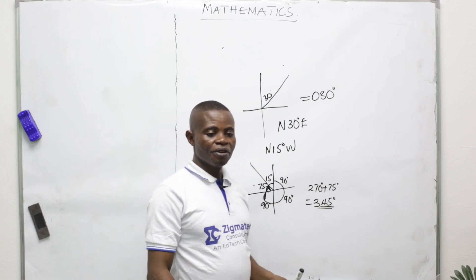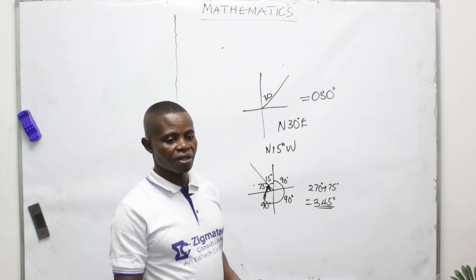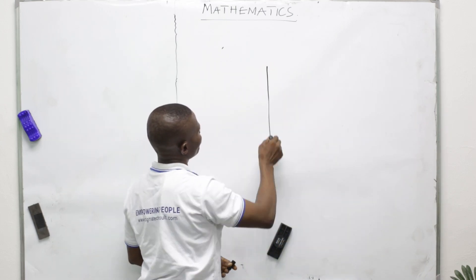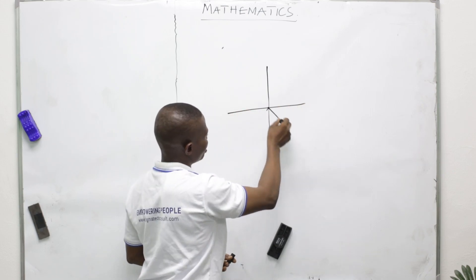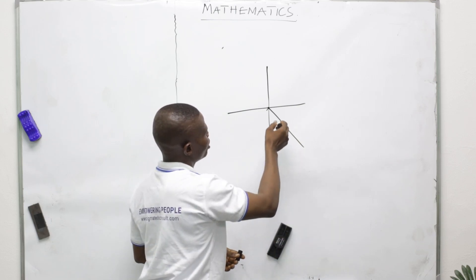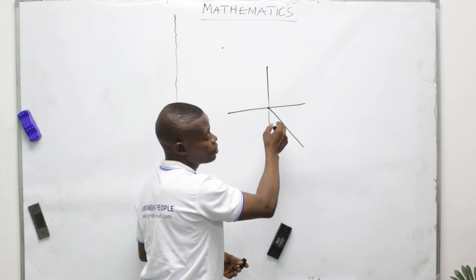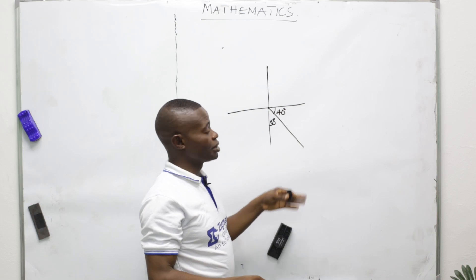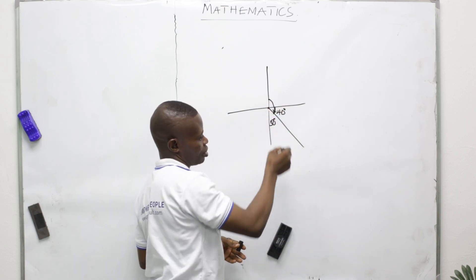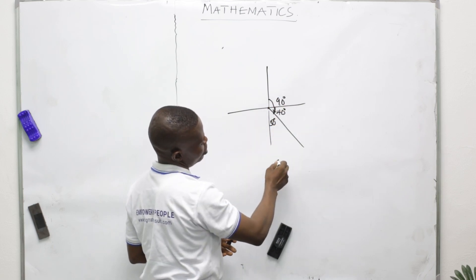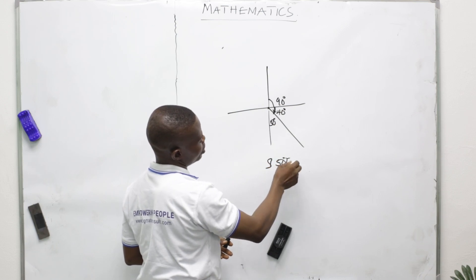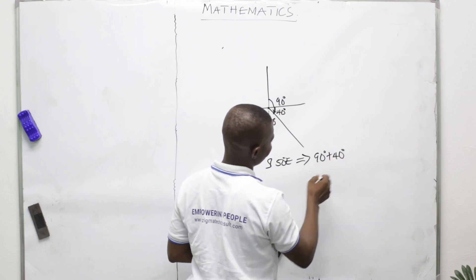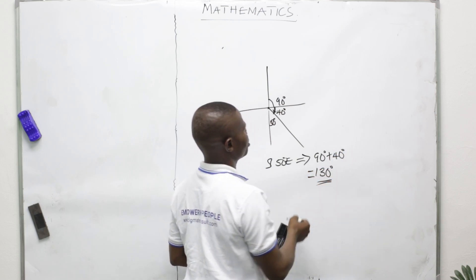We also have 50 degrees southeast. This is 50 degrees, so the remainder here is 40 degrees. The three-digit bearing movement starts from north going clockwise, stopping here. This is 90 degrees. So 50 degrees southeast to three-digit implies 90 plus 40 degrees, giving us 130 degrees.